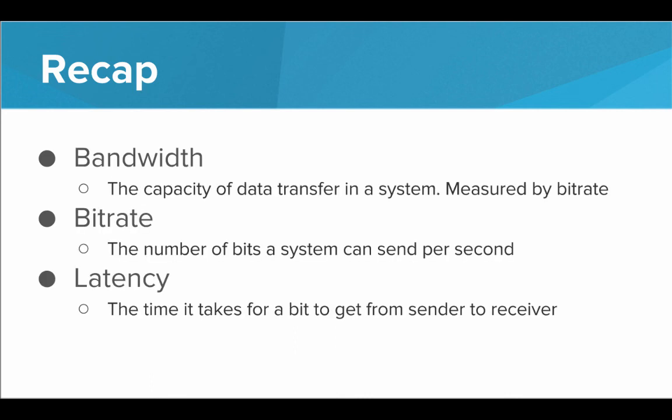Also, to recap three important terms, we have bandwidth. That is the capacity of data transfer in a system, measured by bit rate. Bit rate is the number of bits that a system can send in one second. That can range from bits per second to kilobits per second, megabits per second, even gigabits per second. And lastly, we have latency. Latency is the time it takes for a bit to get from a sender to the receiver. That largely depends on the material that it's being sent through. These are the physical systems that the internet is built upon. This is the physical hardware that is used to send bits across the globe.